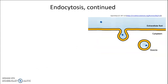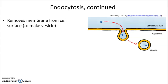Here's another image depicting endocytosis. The cell membrane separates the cytoplasm from the extracellular fluid, and the cell pockets the membrane inwards to create a vesicle around a desired object, which then moves into the cell. In performing this process, membrane is actually removed from the cell surface, reducing the total surface area of the cell membrane.